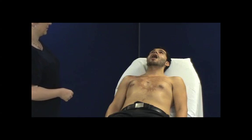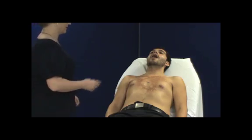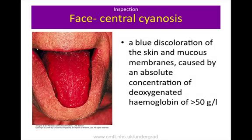When examining for central cyanosis, ask the patient to stick their tongue out and lift it upwards, and examine under the tongue. Central cyanosis is a bluish discolouration of the skin and mucous membranes caused by an absolute concentration of deoxygenated haemoglobin of greater than 50 grams per litre. If a patient is centrally cyanosed, they will automatically be peripherally cyanosed also. Note the converse is not true — conditions such as Raynaud's phenomenon cause sluggish circulation in the extremities, resulting in peripheral cyanosis only.